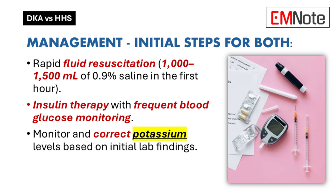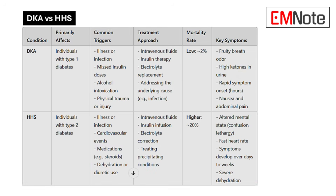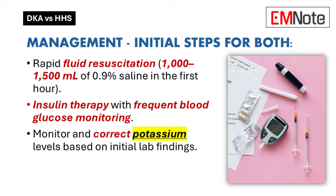When managing DKA or HHS, you have to assess the situation quickly — is there acidosis, what's the blood glucose level, are there ketones in the urine? You need all those pieces to make the right call. Once you have the diagnosis, aggressive fluid resuscitation is key for both conditions. We're talking 1,000 to 1,500 milliliters of 0.9% saline in the first hour to restore intravascular volume and improve perfusion as quickly as possible.